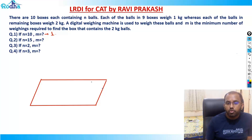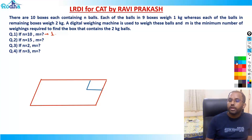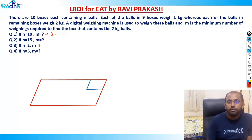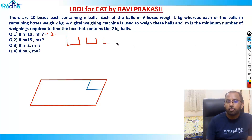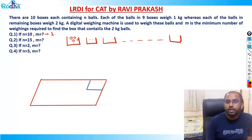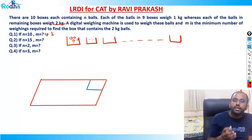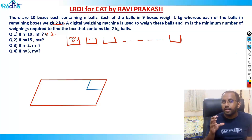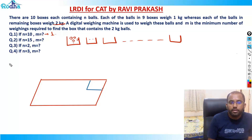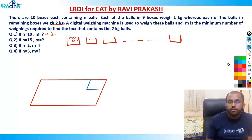We have 10 boxes, each containing 10 balls of 1 kg, and any one box contains 10 balls of 2 kg. The logic I used is: we try and take a distinct number of balls from each bag as long as possible. This is a very important concept for this set.